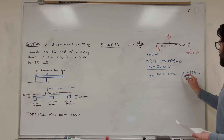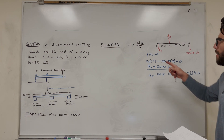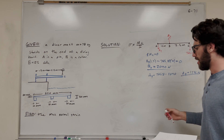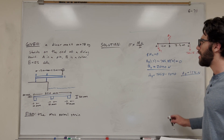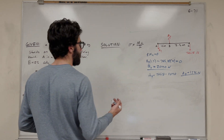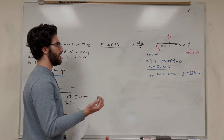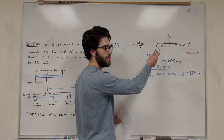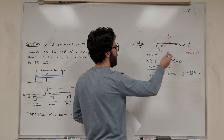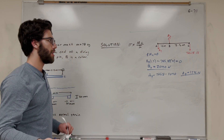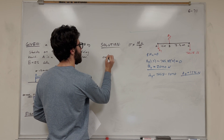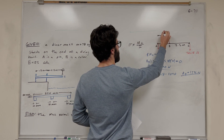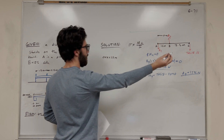We have these two good pieces of information. We're trying to find where the moment is maximized, so we need to draw a moment diagram. We need two equations. There's going to be one from 0 to 1.5 meters, then something happens at B, and another equation from 1.5 meters to 4 meters. x starts at A and moves to the end.